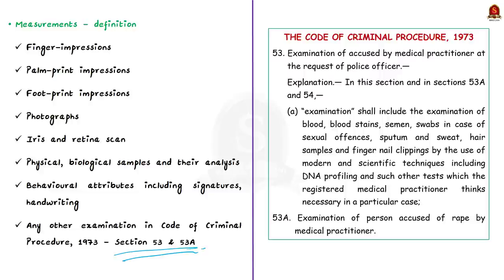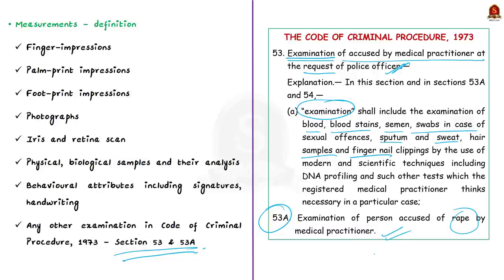What is section 53 or 53A? Section 53 deals with examination of the accused by a medical practitioner at the request of a police officer. Under this section, examination includes examination of blood, blood stains, semen, swabs in case of sexual offences, sputum and sweat, hair samples, and fingernail clippings. Section 53A deals with examination of a person accused of rape by a medical practitioner, and similarly includes semen samples, swabs, hair samples, etc. All of these have been brought under the ambit of measurements under this bill.